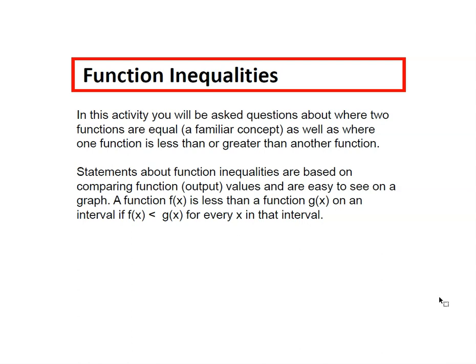A function f(x) is less than a function g(x) on an interval if f(x) is less than g(x) for every x in that interval. We're looking at the output values. The f(x) output value is less than the g(x) output value for every x.